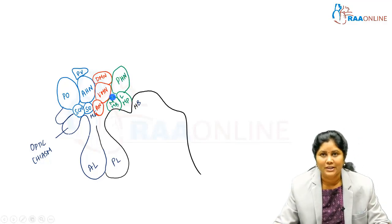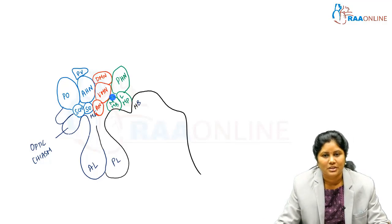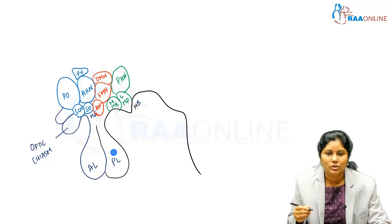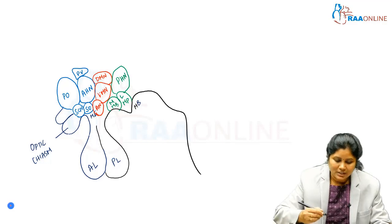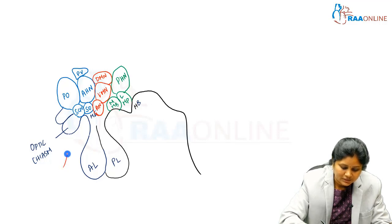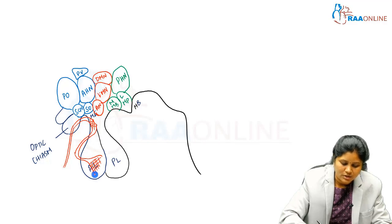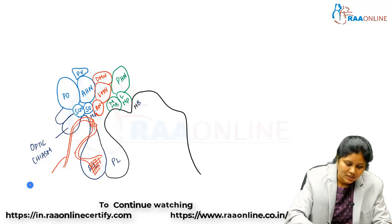There is also a premammillary body, and the lateral hypothalamic nucleus is somewhat hidden behind the other structures. These are the cluster of nuclei that form the structure of the hypothalamus. It is closely related to the optic chiasm, and to the anterior and posterior pituitary. The connection between hypothalamus and pituitary is via the superior hypophysial artery, which travels to the hypothalamus, forms a plexus in the median eminence, and then enters the anterior lobe of the pituitary forming another plexus — this is the hypothalamo-hypophysial portal system.